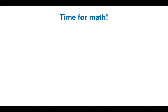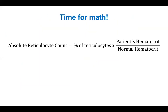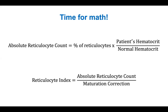The absolute reticulocyte count is equal to the percentage of reticulocytes times the patient's hematocrit over the normal hematocrit. The reticulocyte index is that value divided by a maturation correction.